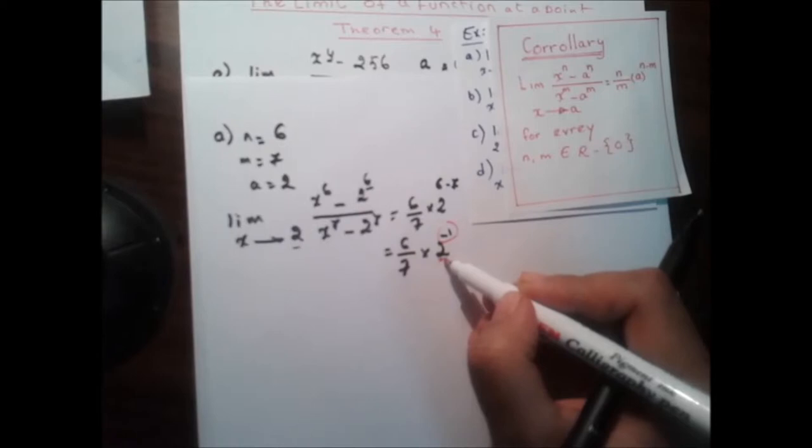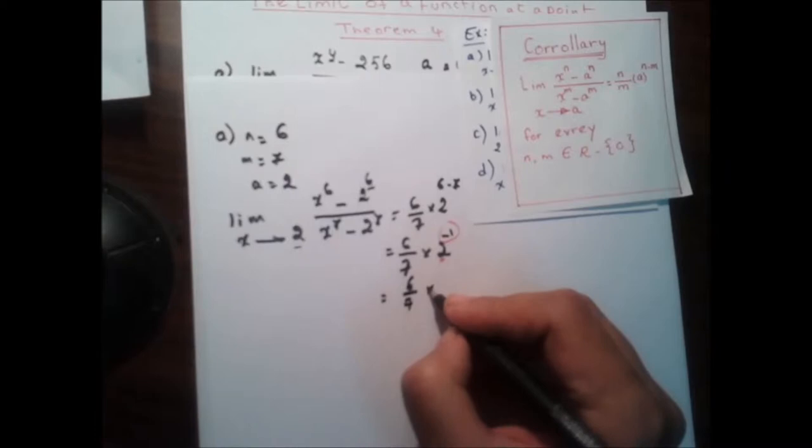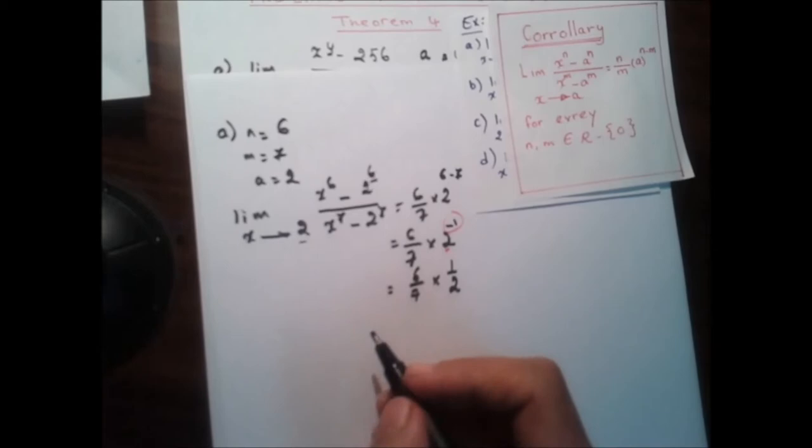Since we have a negative power, we can move the 2 down. So this is equal to 6 over 7 times 1 over 2, changing 2 to the negative 1 into 1 over 2.